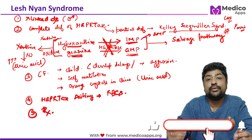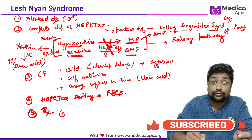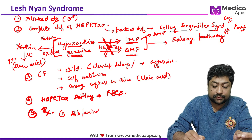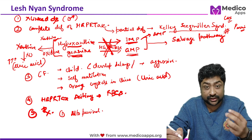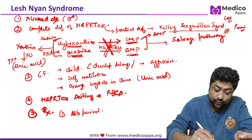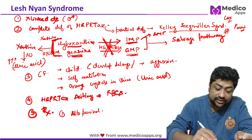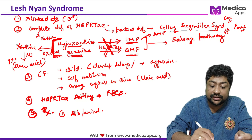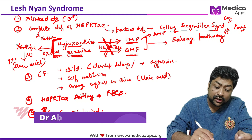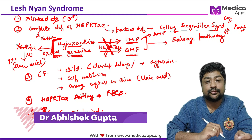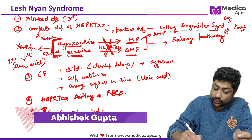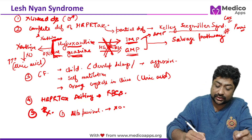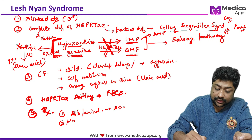Once the diagnosis is established, management begins with allopurinol as the drug of choice. The rationale: since the entire pathogenesis involves xanthine oxidase converting excess hypoxanthine and guanine into uric acid, inhibiting xanthine oxidase with allopurinol will bring uric acid levels down.